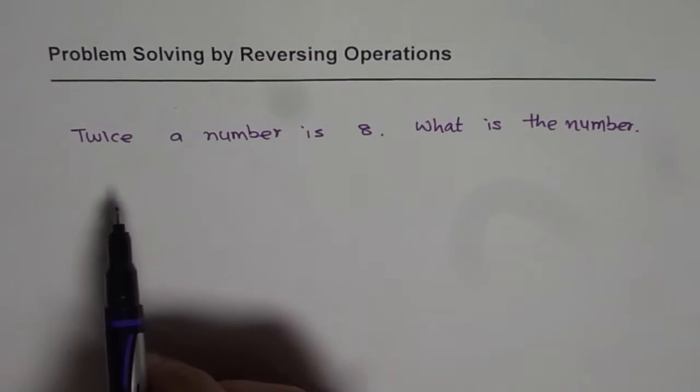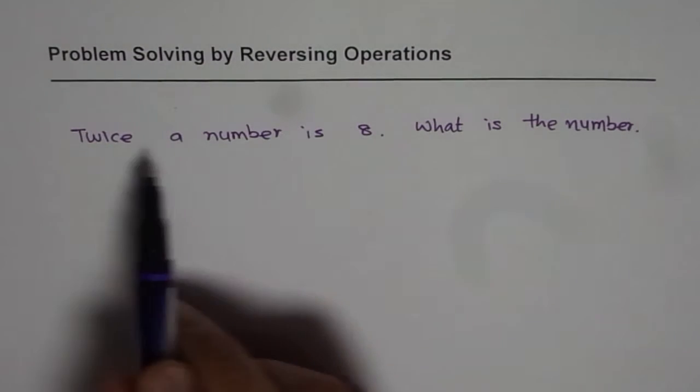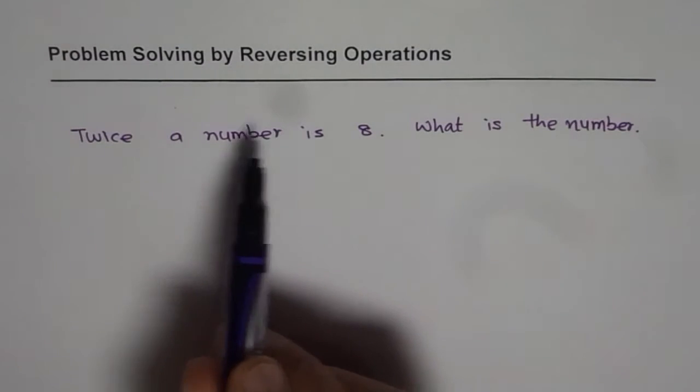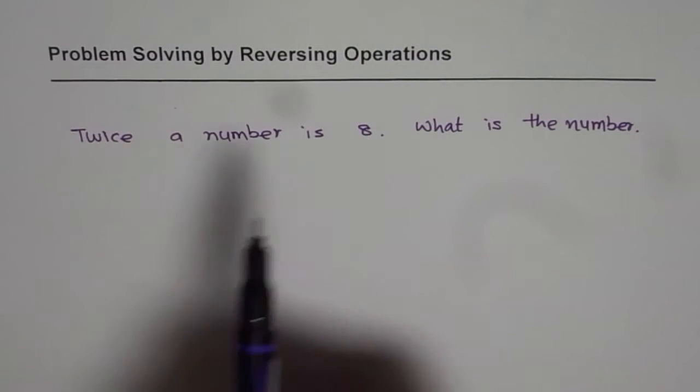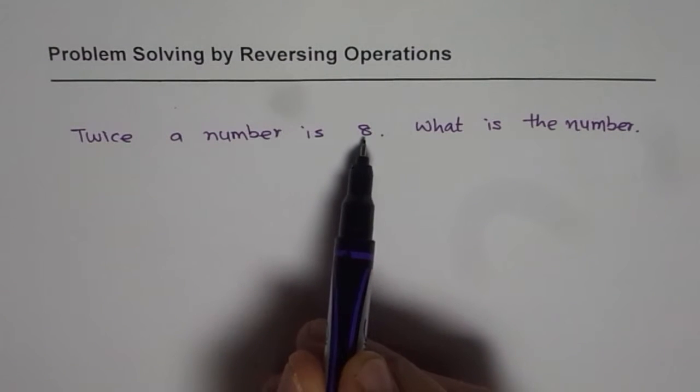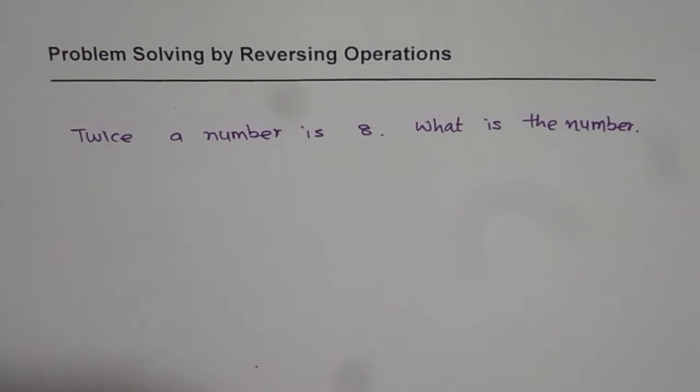To find the number, we can do reverse of the operation. It says twice a number is 8. So, 2 times a number is 8. What is the number? It should be half of 8. That is the reverse operation.